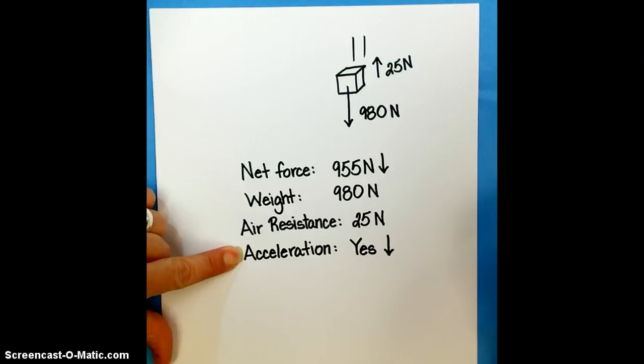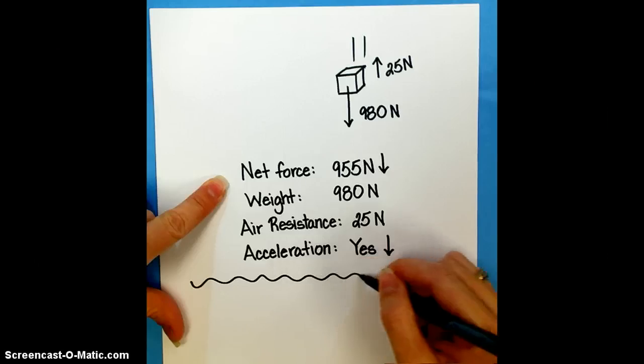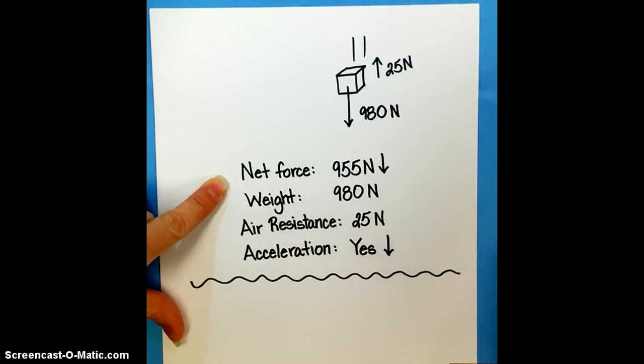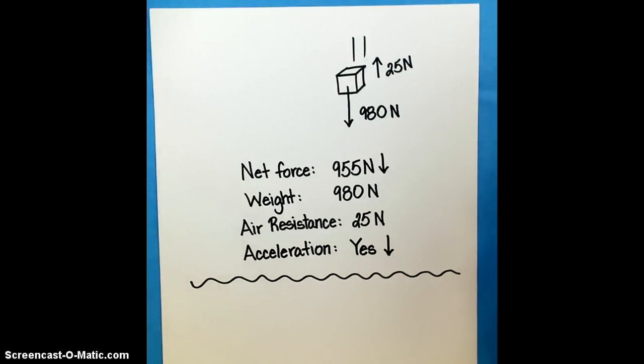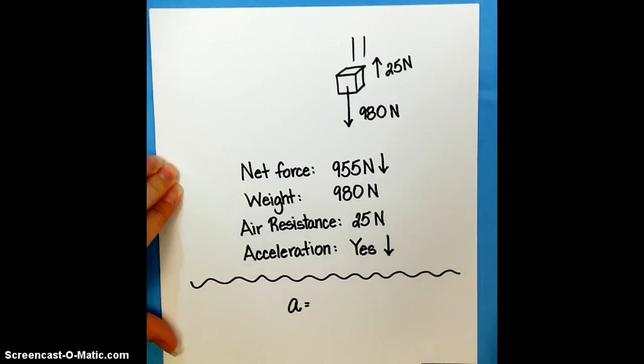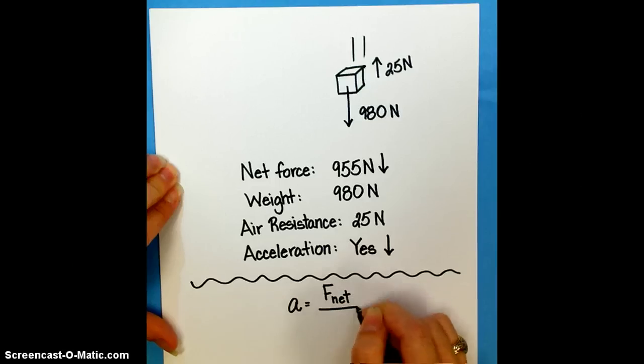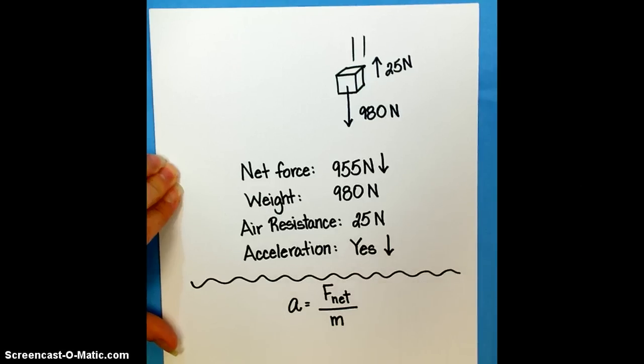So how do we find acceleration? Well, there's some things that we need to know. First of all, in class today, we are discussing Newton's first and second law. And Newton's second law says that acceleration of an object equals the net force acting on an object divided by its mass. Well, that's not helpful yet, because we don't know what the mass is.